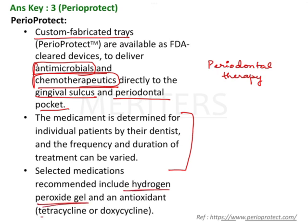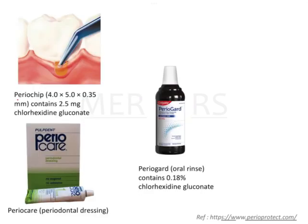Hydrogen peroxide gel, tetracycline, and doxycycline — so antibiotics and hydrogen peroxide are a few medicaments that can be used with these trays. If you want to deliver any drug locally following periodontal therapy, these trays are very efficient ways of instilling this to the patient.